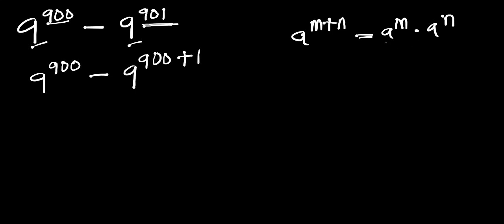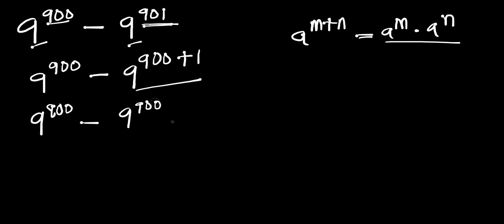Applying this identity, we get 9 to the power of 900, minus 9 to the power of 900 times 9 to the power of 1. We now have 9 to the power of 900 appearing in both terms, so we can factor that out. We bring out 9 to the power of 900.